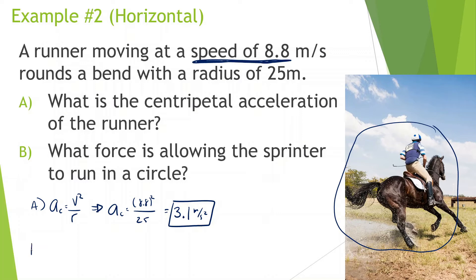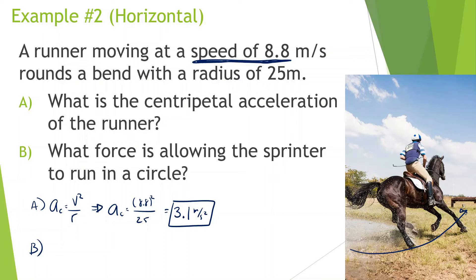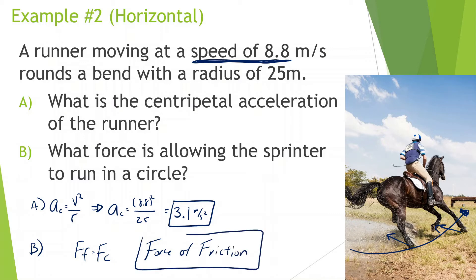For part B: what force is allowing the sprinter to run in a circle? Looking at this image, the horse is moving in a circle, and what's allowing it to move in a circle — you can even see it with the dust — is the friction from its legs. Without friction, it's impossible to turn or go in a circle. So the force of friction is what allows this runner to run in a circle. We'll often have to think about what force allows an object to move in a circle, and sometimes it will be friction.